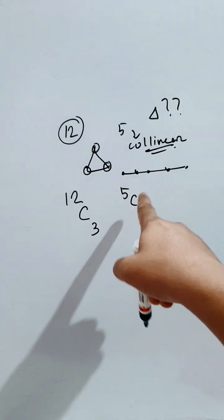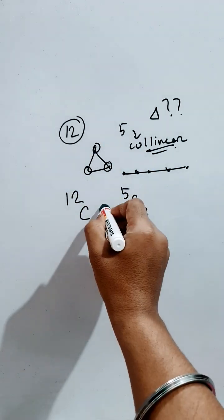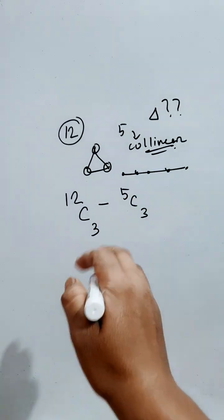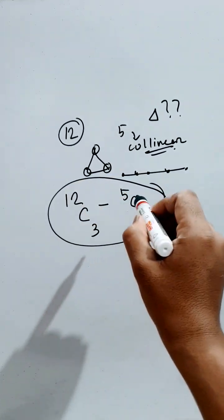Using these 5 points we can form this number of triangles. But this is an impossible case. So this will be subtracted from the 12C3 term. So this is the number of triangles we can form.